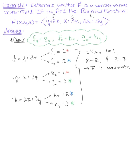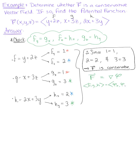This tells us that we can write the vector field F as equivalent to the gradient of phi. In other words, the vector (f, g, h) is equivalent to the vector with the partial derivative of phi with respect to x, partial derivative of phi with respect to y, and partial derivative of phi with respect to z. This also tells us that the potential function exists, and so we need to find the potential function phi of x, y, z.